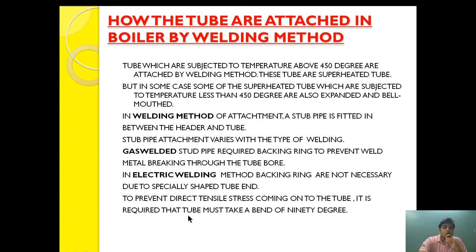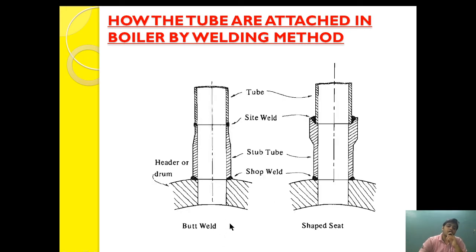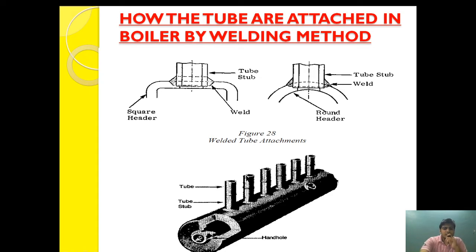To prevent diode tensile stress coming onto the tube, the tubes must bend at 90 degrees. As you can see, this is a square header with a tube stub, and this is a round header with a tube stub. Welding is carried out here between the header and the tube stub, and then the tubes are provided onto the stub.